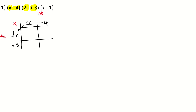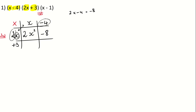Then you multiply those two together. 2x times x — well, this x really is a 1x. 2 times 1 is 2, and x times x is x squared. Then you've got a positive 2x multiplied by a negative 4. If you're not sure what the sign is going to be, just put it in your calculator: 2 times negative 4, you'll get a negative 8. So this is negative 8x.